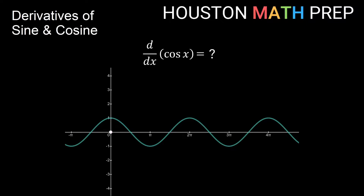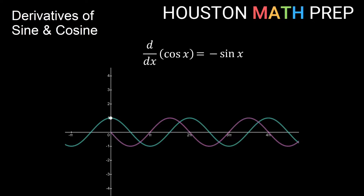If I let my dot now also move horizontally, you can see it traces out a graph that looks a bit like the graph of sine x, but actually it's upside down. So our dot has actually traced out the graph of negative sine x, and we know that the derivative of cosine x is negative sine x.